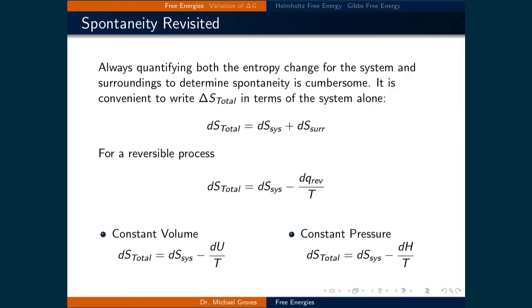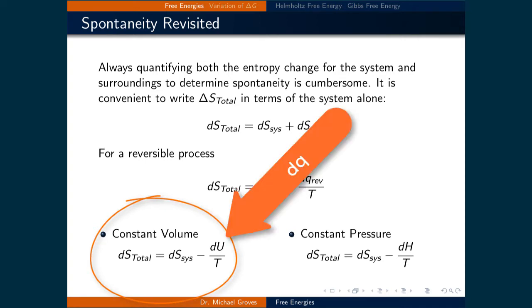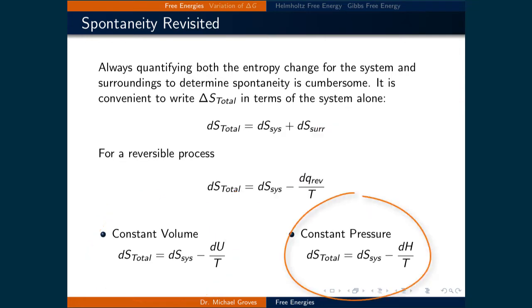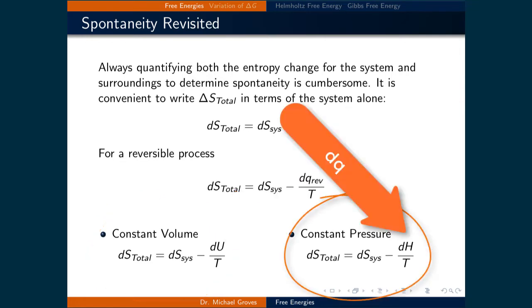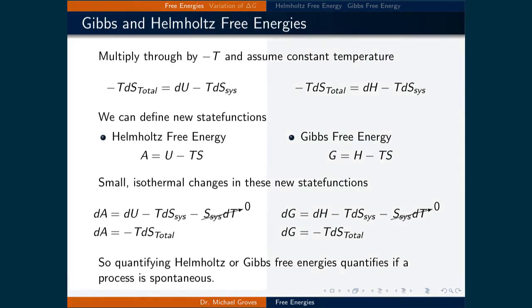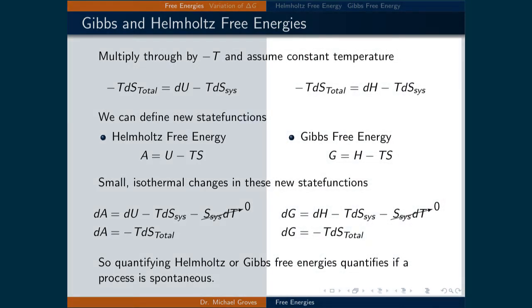This heat transferred can be rewritten into two different state functions depending upon the conditions. If the process is at constant volume, then it can be written as a small change in the internal energy. If the process is at constant pressure, then it can be written as a small change in the enthalpy. This slide is broken in half, where the left side is where the process is at constant volume and the right side is at constant pressure. They will follow an almost identical procedure.